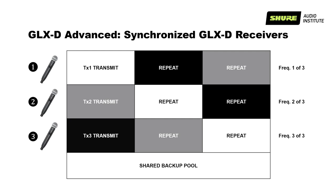GLXD Advanced requires the frequency manager hardware and the GLXD 4R rack-mount receivers. The transmitters are the same as regular GLXD since transmitters are ultimately under the control of receivers. For standard GLXD, three or maybe four simultaneous systems are usually possible; any more than that, you'd need GLXD Advanced or systems in other frequency ranges.